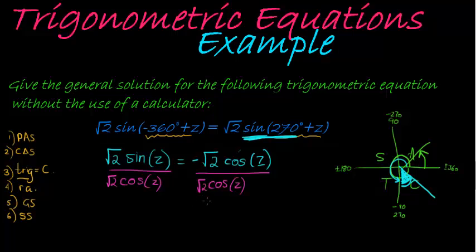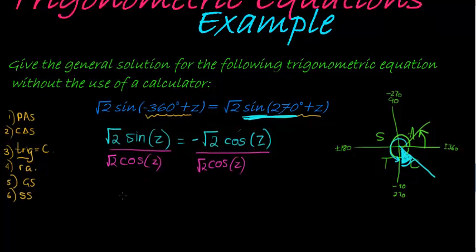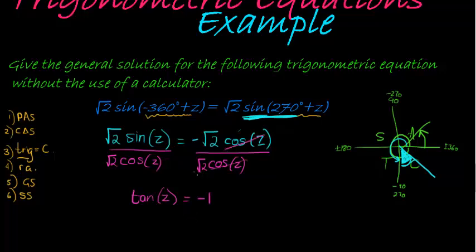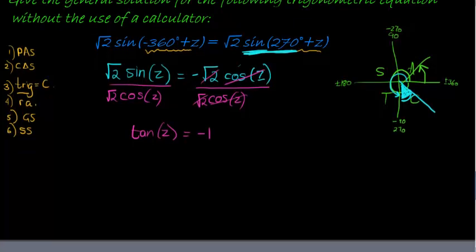Also dividing the square root of 2 on both sides to get the following answer. I get tan of z is equal to, and then we have negative 1. Tan of z is equal to negative 1. Do you follow that? Well, this just cancels completely with each other. So everything divides into each other to give me 1 and is a negative. So it's negative 1.